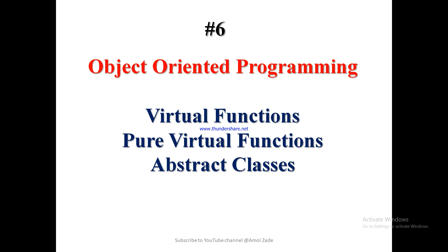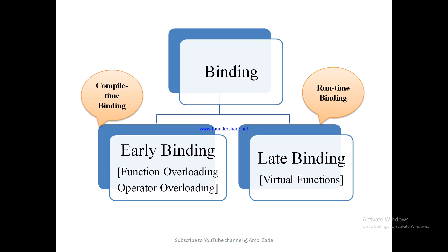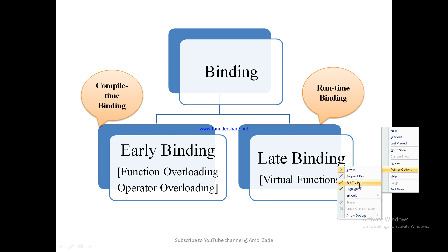A virtual function is also called an example of runtime binding. Binding refers to the process of linking data members or member functions to an object, and this takes place either at compile time or at runtime. Binding at compile time is called early binding, and binding at runtime is called late binding. The example of late binding is virtual functions, and the example of early binding is function overloading or operator overloading.